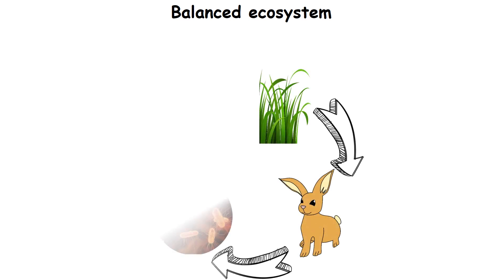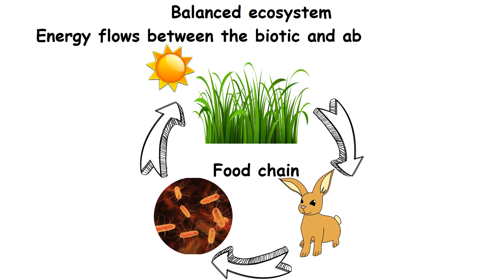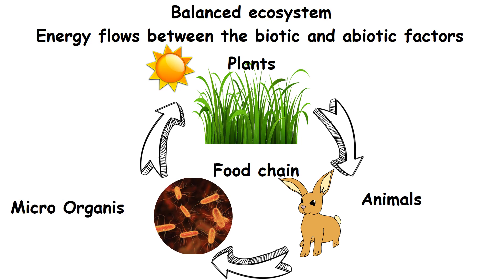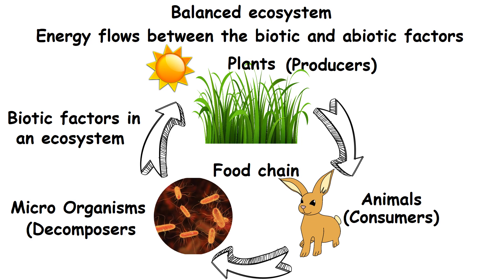It is important for the food chain to exist in any ecosystem to make sure that energy flows between the biotic and abiotic factors. A balanced ecosystem supports plants, animals, and microorganisms to grow in their environment. The biotic factors in an ecosystem include producers, consumers, and decomposers.